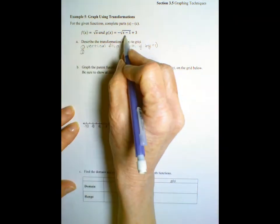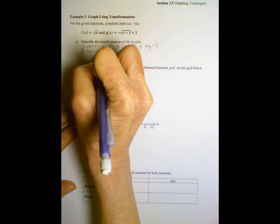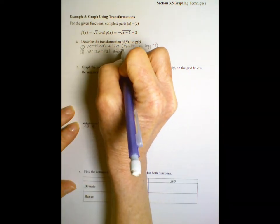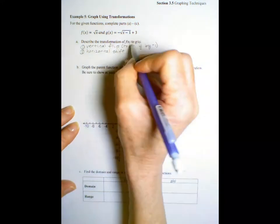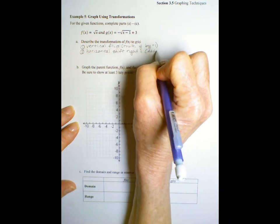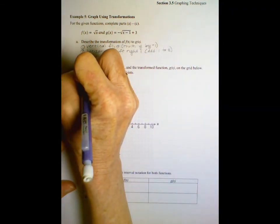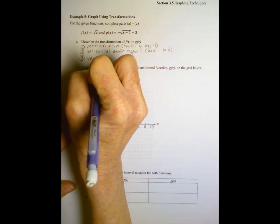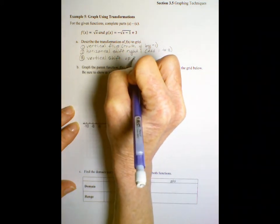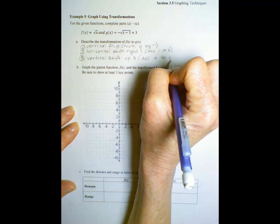The second we see is inside the function, so it's horizontal, it's a horizontal shift, right? Which direction? To the right, right one, so we add one to x. And then back outside the function, we have a vertical shift up three, which means we would add three to all the y coordinates.